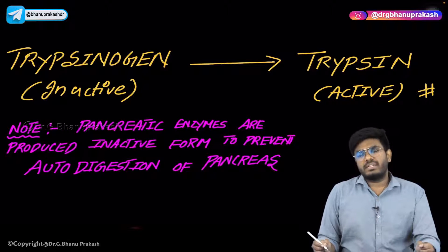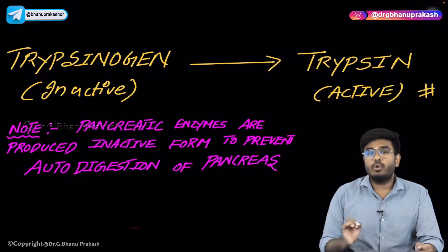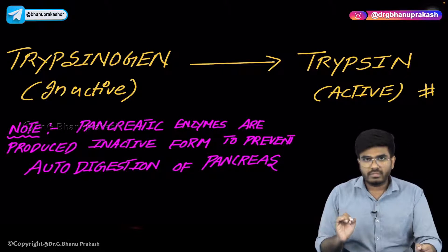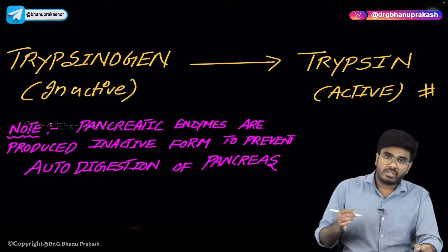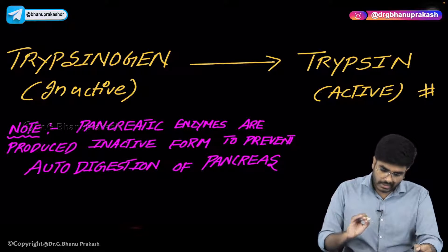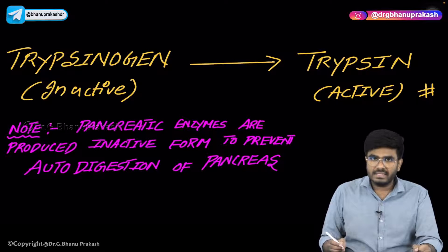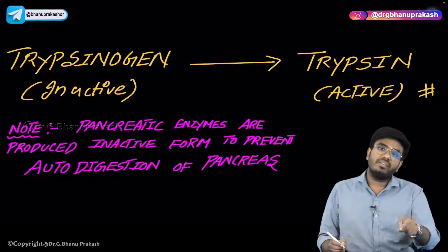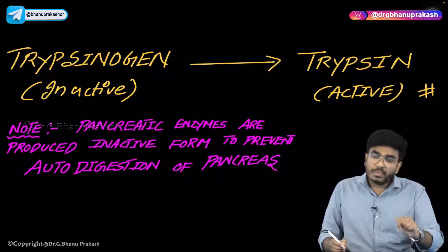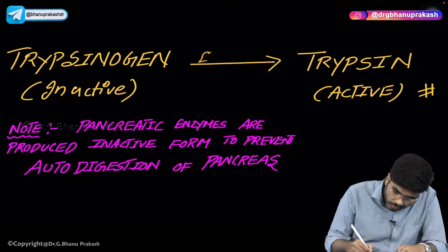We have studied that wherever you see the word 'ogen', anything ending with 'ogen' is an inactive substance. So trypsinogen, chymotrypsinogen — all these are inactive substances. Trypsinogen is converted into trypsin with the help of enterokinase. Pepsinogen, by contrast, is converted into pepsin with the help of HCl. Trypsinogen is converted into trypsin with the help of enterokinase, which is nothing but the intestinal juice.